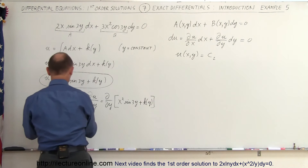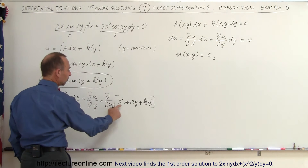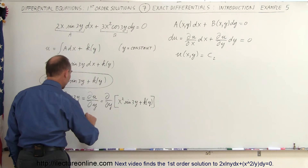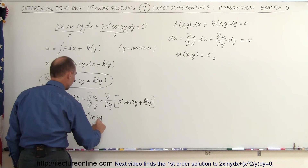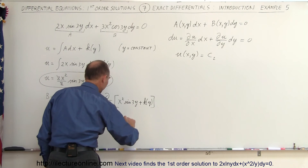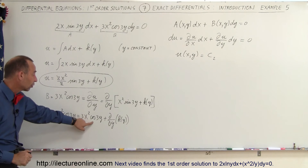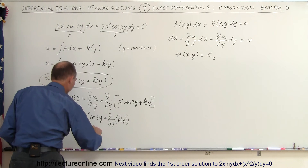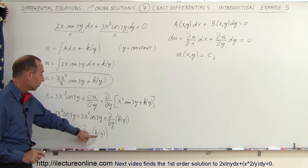Taking the derivative, on the left side we have 3x squared times the cosine of 3y. On the right, x is constant, so the derivative of sine of 3y gives cosine of 3y times 3, yielding 3x squared cosine of 3y, plus the derivative of k(y) with respect to y. Notice that 3x squared cosine of 3y appears on both sides — they cancel out — leaving 0 equals dk/dy.